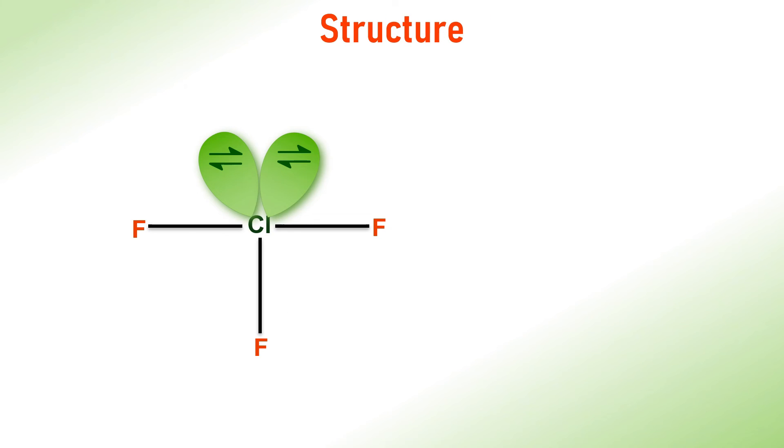As a result, the chlorine trifluoride molecule is said to have trigonal bipyramidal structure with the two lone pairs occupying equatorial positions. Or just by considering only the arrangement of bond pairs, it is said to have the T shape.